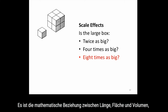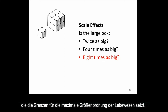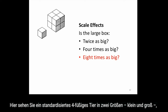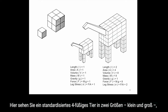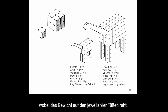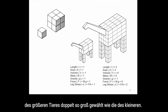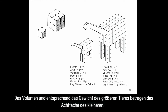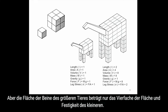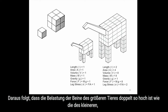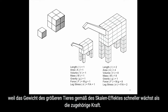It is this mathematical relationship between length, area, and volume which limits the maximum scale of life. Here is a standard four-legged animal in two sizes — small and large — with the weight supported on four legs. The linear dimensions of the large animal are twice those of the small animal. The volume and weight of the large animal is 8 times the small animal, but the legs are only 4 times the area and strength. The large animal's leg stress is twice the small animal's, because weight increases quicker than strength due to the scale effect.